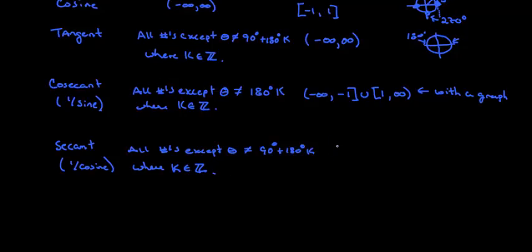The numbers we can get out are the same thing as the cosecant. So negative infinity to negative 1, union 1 to infinity. The last one is the cotangent.